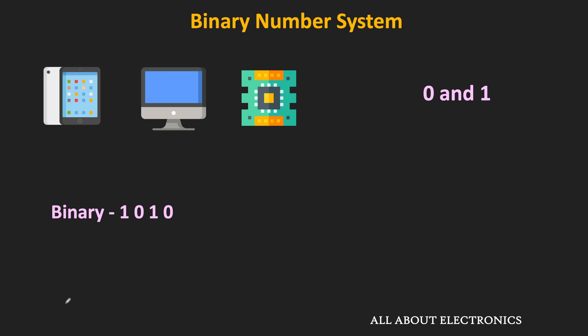For example, let's say there is a binary number 1010. But if you see, the same number also exists in the decimal number system. So to distinguish the numbers of different number systems, usually they are represented by their base or radix. For the binary number system, the base is 2 because it consists of only 2 digits, that is 0 and 1. In the decimal number system, since there are 10 different digits, so the base or radix is equal to 10.